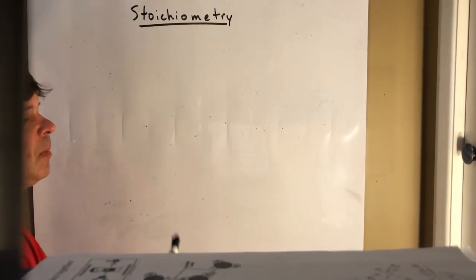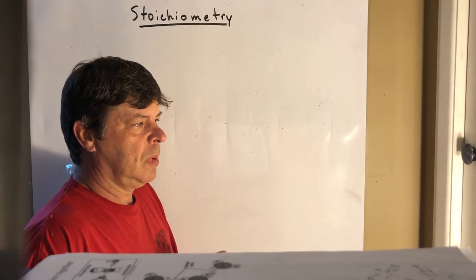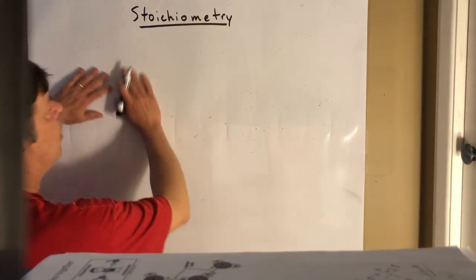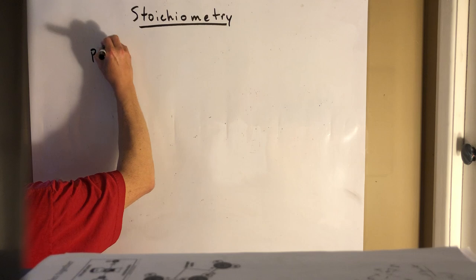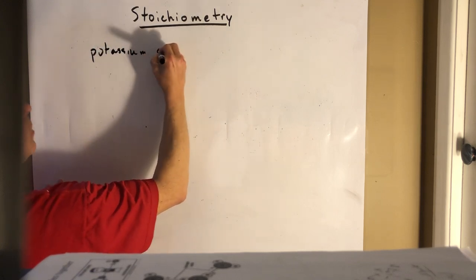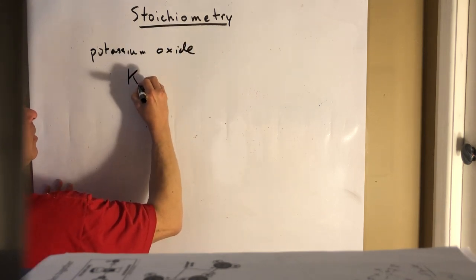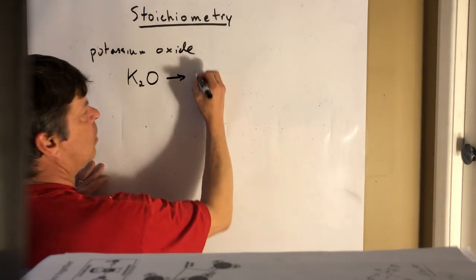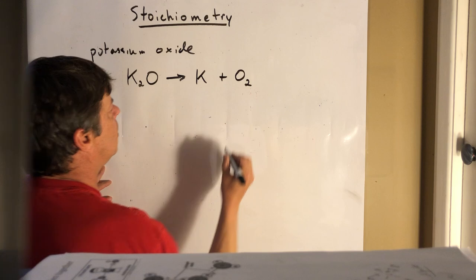All right, let's look at another stoichiometry problem. Let's look at a decomposition reaction. Let's decompose potassium oxide. So we're going to decompose potassium oxide and that'll give you potassium and oxygen. Let's balance that.